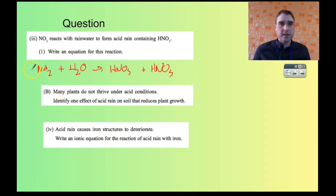We need to balance this. I think we need two NO2. So two nitrogen, two hydrogen, five oxygens on each side. There we go, that's balanced.